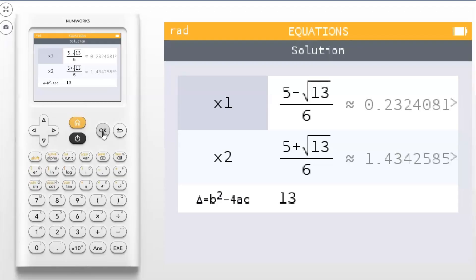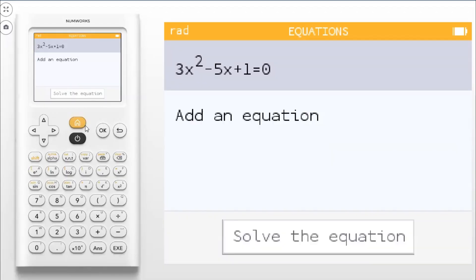And look how cool it gives the answers. This was a particular quadratic. It gives you the exact answers, 5 plus or minus the radical 13 over 6, and it gives the decimal approximations as well. So pretty cool feature. Anytime you want to solve an equation, all you got to do is type it in there and it'll solve it for you.